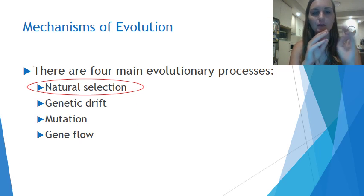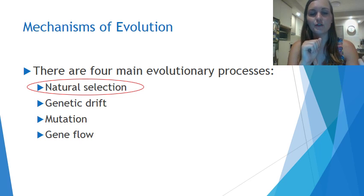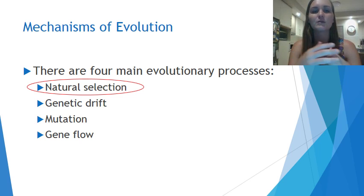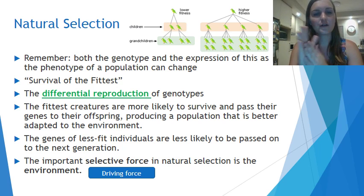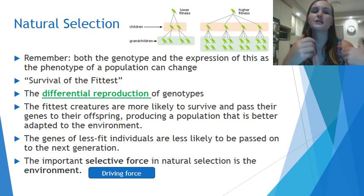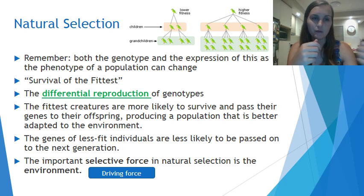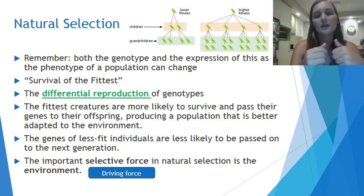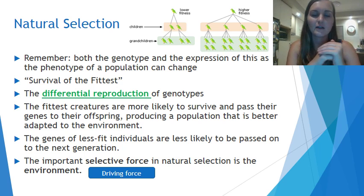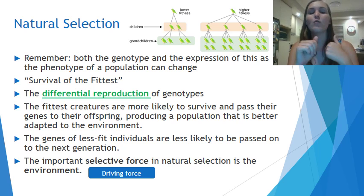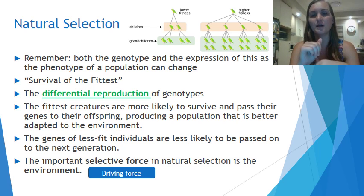There are four main evolutionary processes — mechanisms of evolution. A really important one you'll be familiar with is natural selection. Both the genotype and the expression of this as the phenotype of a population can change, and that's important for natural selection to occur. At the very core of natural selection is differential reproduction of genotypes and therefore phenotypes.